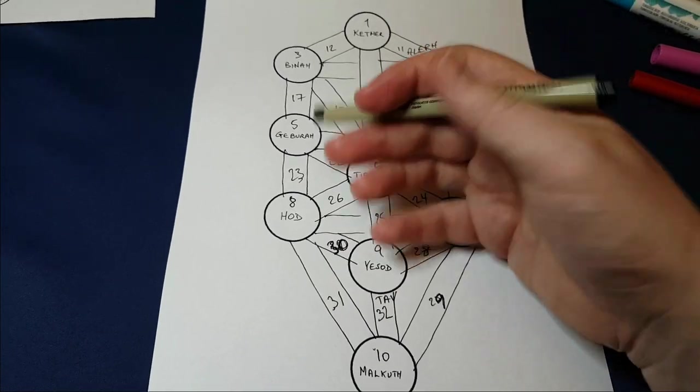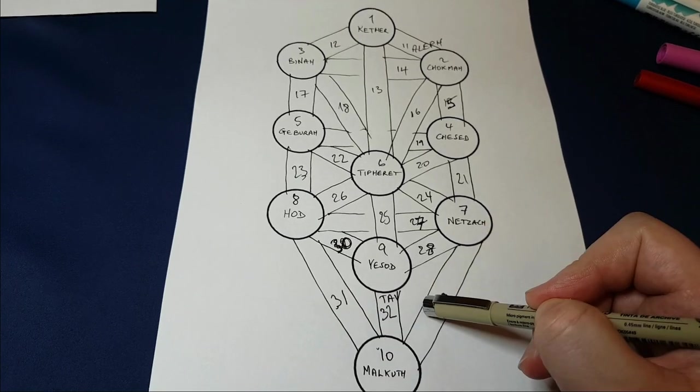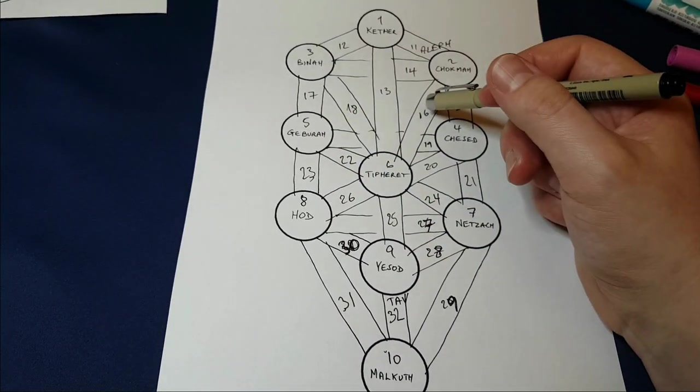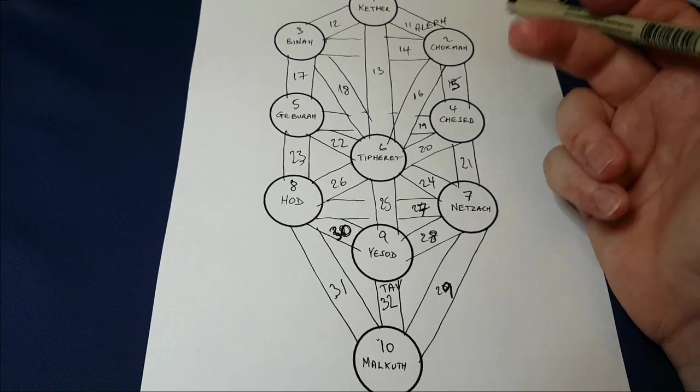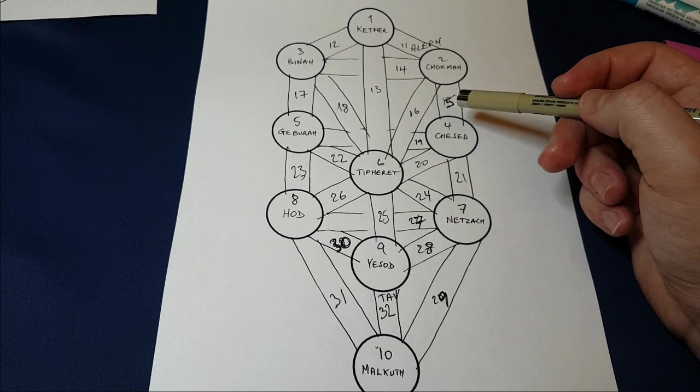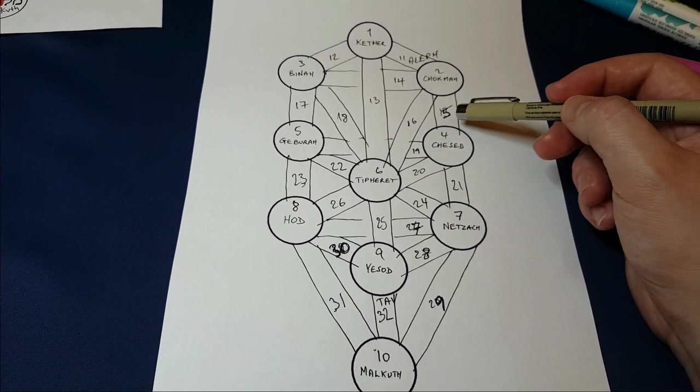If we're talking about the tarot, well, a lot of people like to place the major arcana on the 22 different paths. There are 22 major arcana, 22 paths. I'll make a further video on the tarot and the tree of life. I think this could possibly be the next one in the series.